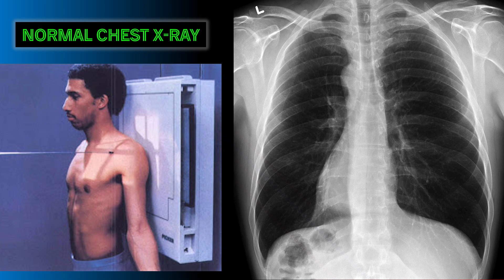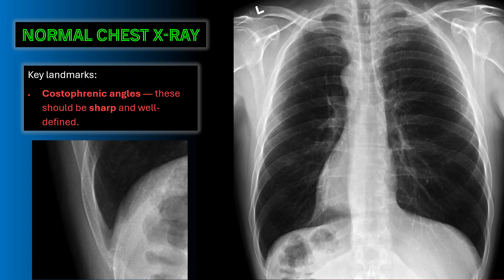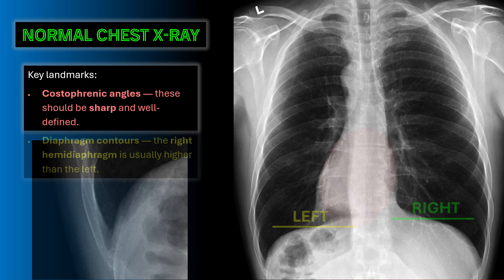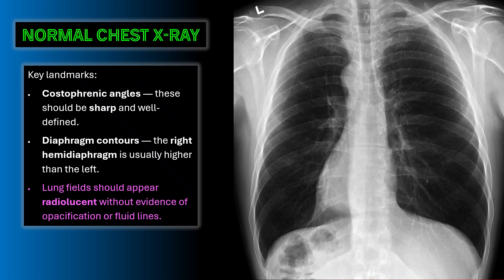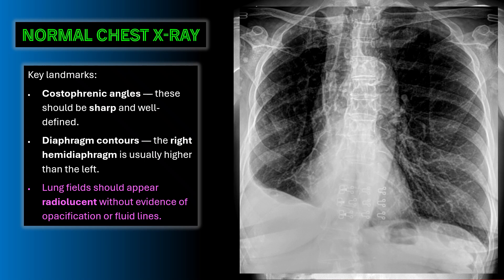Let's first review what a normal chest x-ray should look like. The costophrenic angles should be sharp, well-defined, and free of any fluid. When we look at the contours of the diaphragm, the right hemidiaphragm is usually higher than the left due to the heart pushing down on the left side. The lung fields should appear radiolucent without evidence of opacification or fluid lines — keep this in mind as we move into pathology.